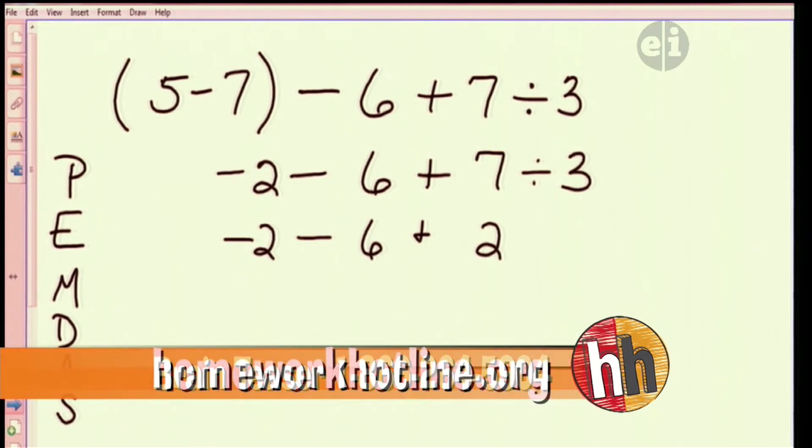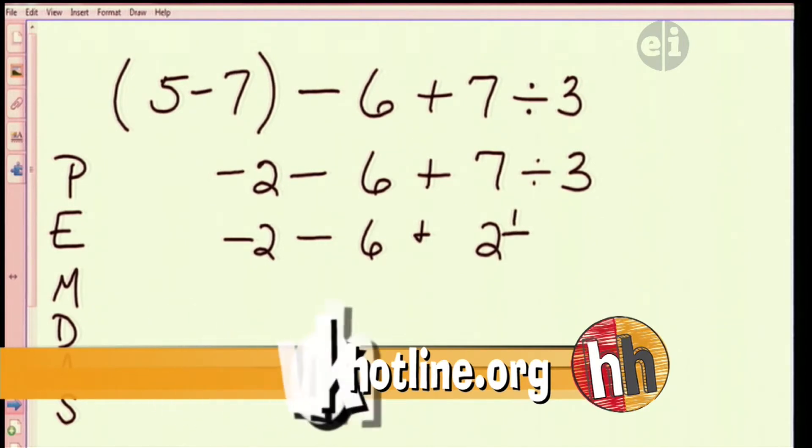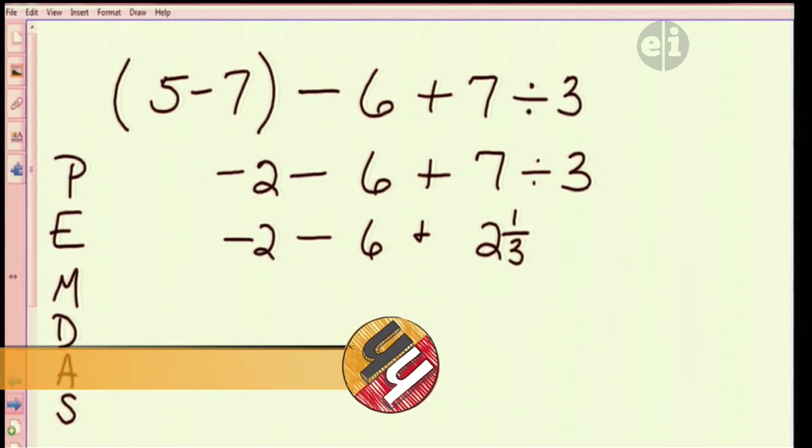And we know that that's 6, so we take away 6 from 7 to get my new numerator of 1. And then put the, I'm dividing by 3, so the denominator is 3.